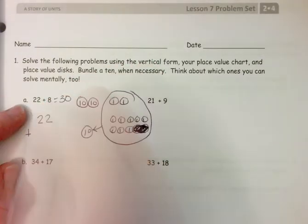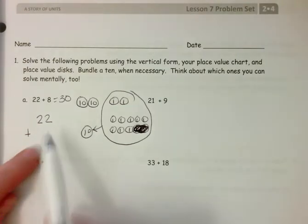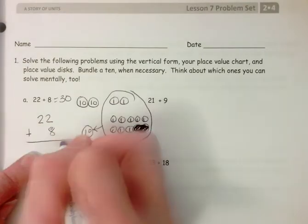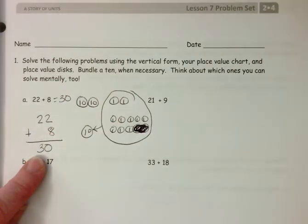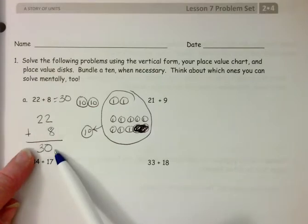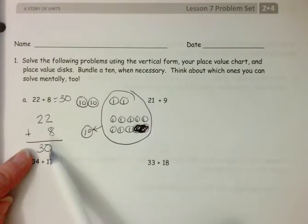I'm going to write that in the vertical form. 22 plus, where does the eight go? Right underneath our two ones to show 30. We want students to be actively creating this vertical form so that they are really thinking about their ones and their tens.